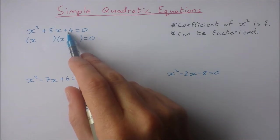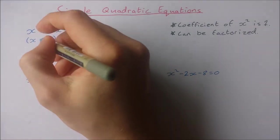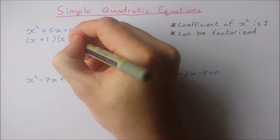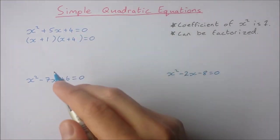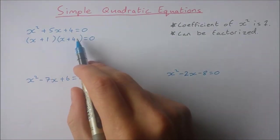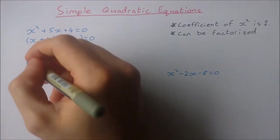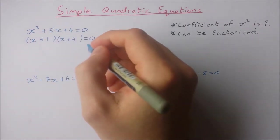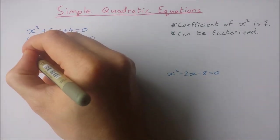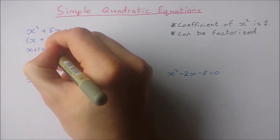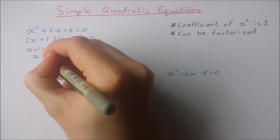So factors of four that will add to give us five are going to be one and four. So x plus one times x plus four is equal to zero. To solve for x then we let both factors equal to zero. So x plus one equals zero. Therefore x is equal to minus one. And x plus four equals zero, so x equals minus four.